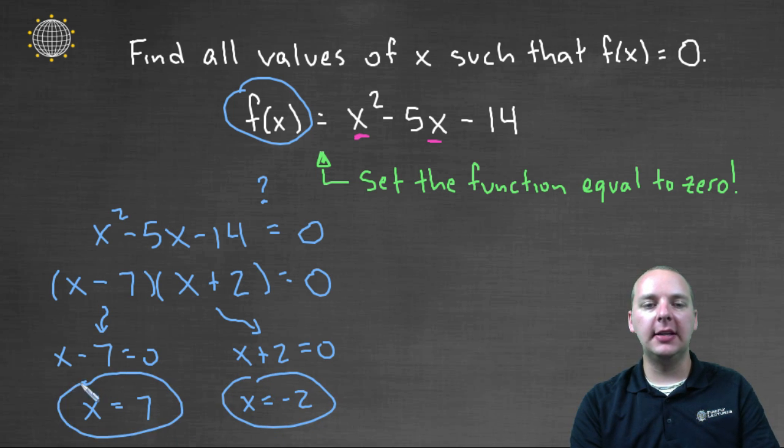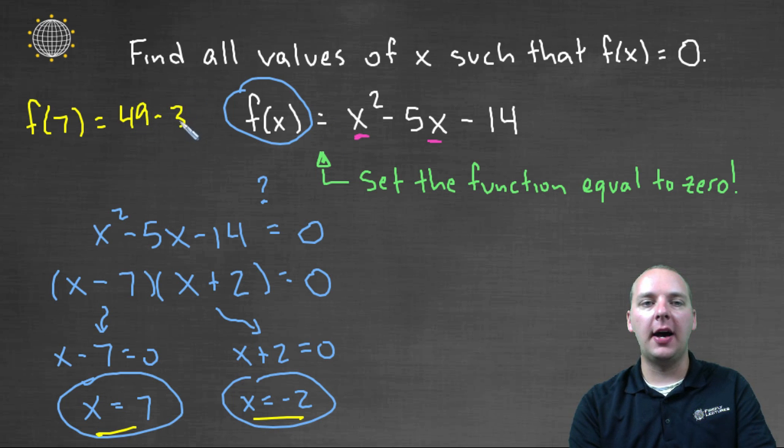So I'm going to circle these guys. And now let me re-read the question and see if it makes sense. Find all the values of x, like seven and negative two, that make the function be zero. And sure enough we can try either of these. I don't think I'll take the time to try both of them, but I'll try one of them. What is f of seven? When we plug in seven for x, let's try it. Seven squared is forty-nine minus five times seven is thirty-five. Forty-nine minus thirty-five is fourteen. And fourteen minus fourteen here on the end gives you zero.